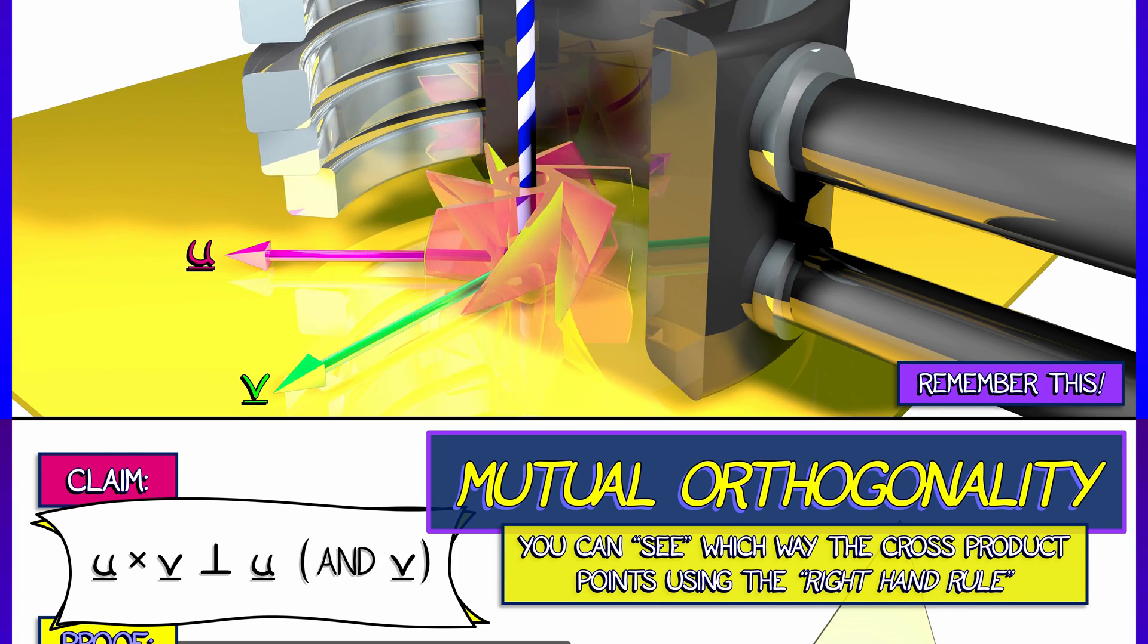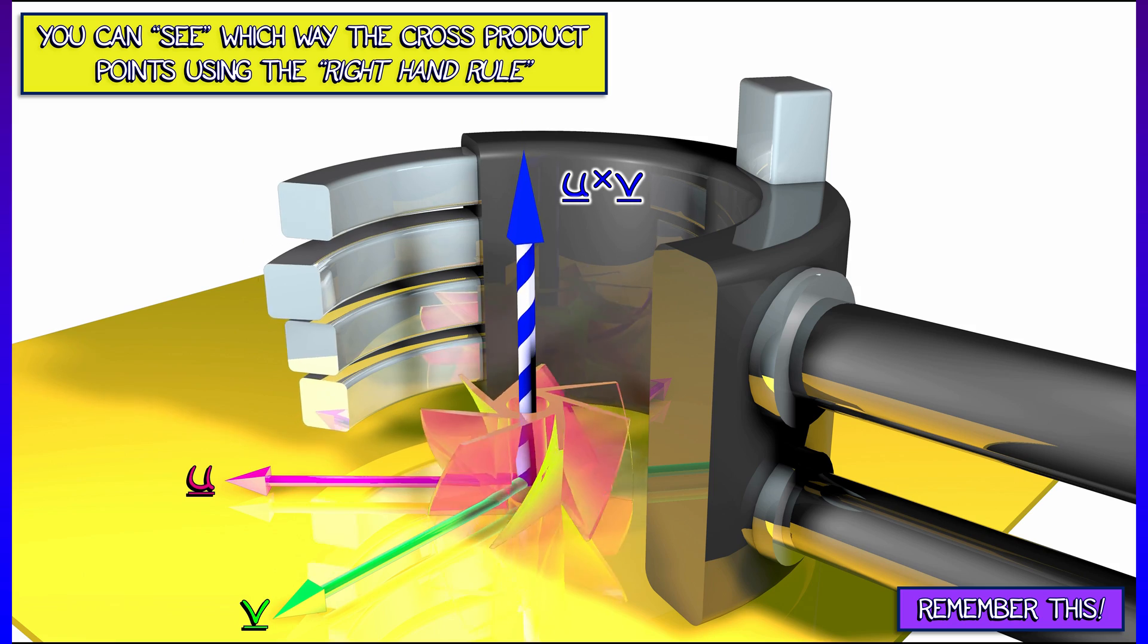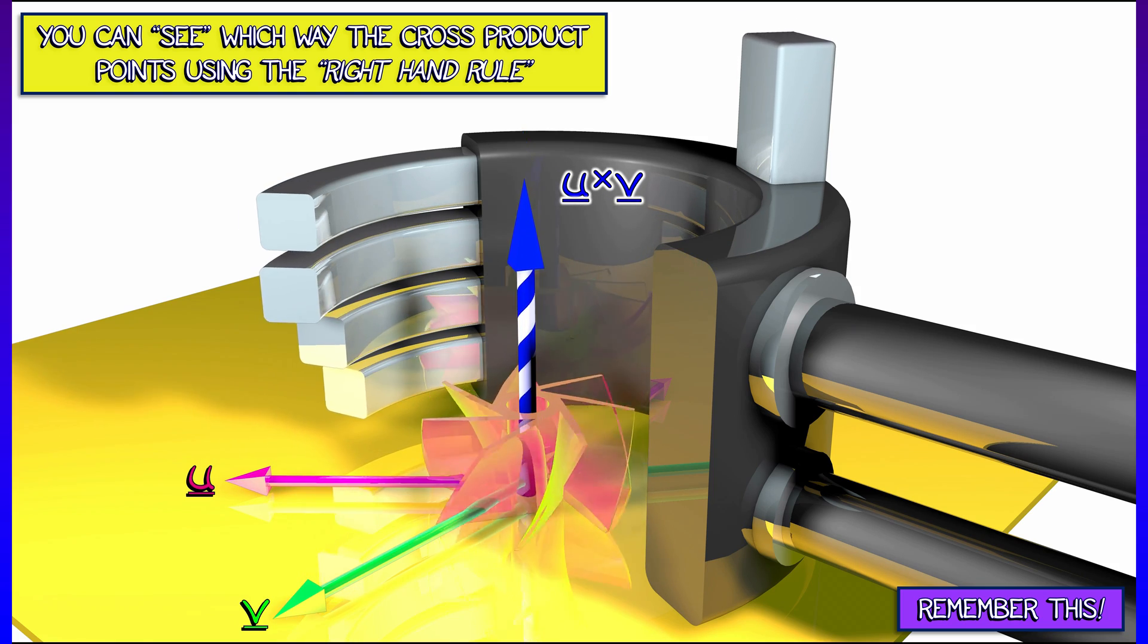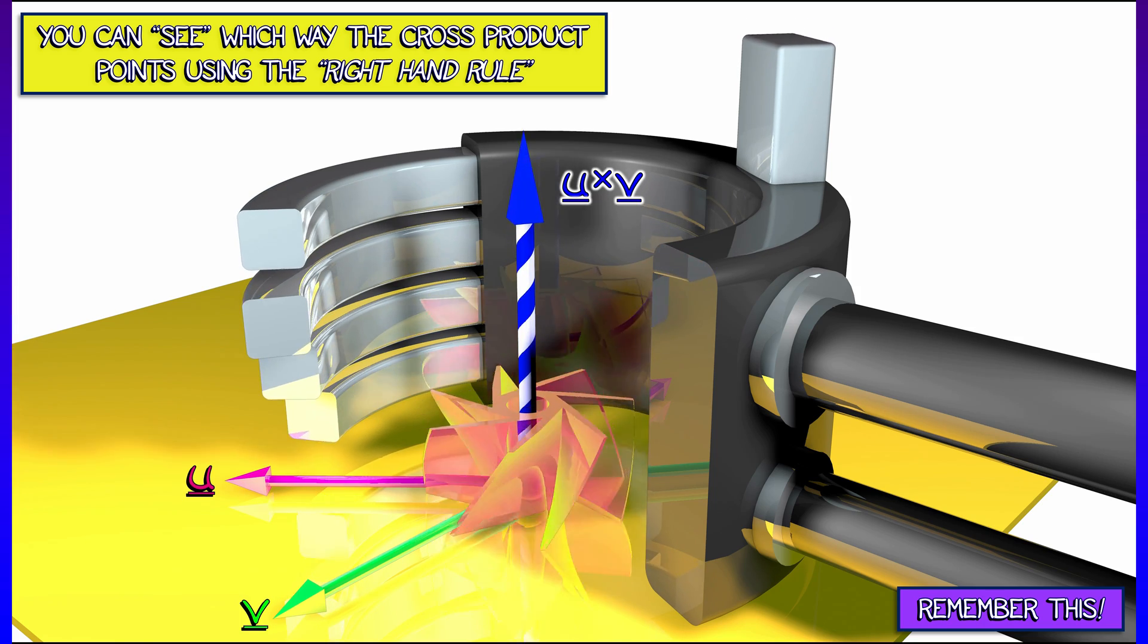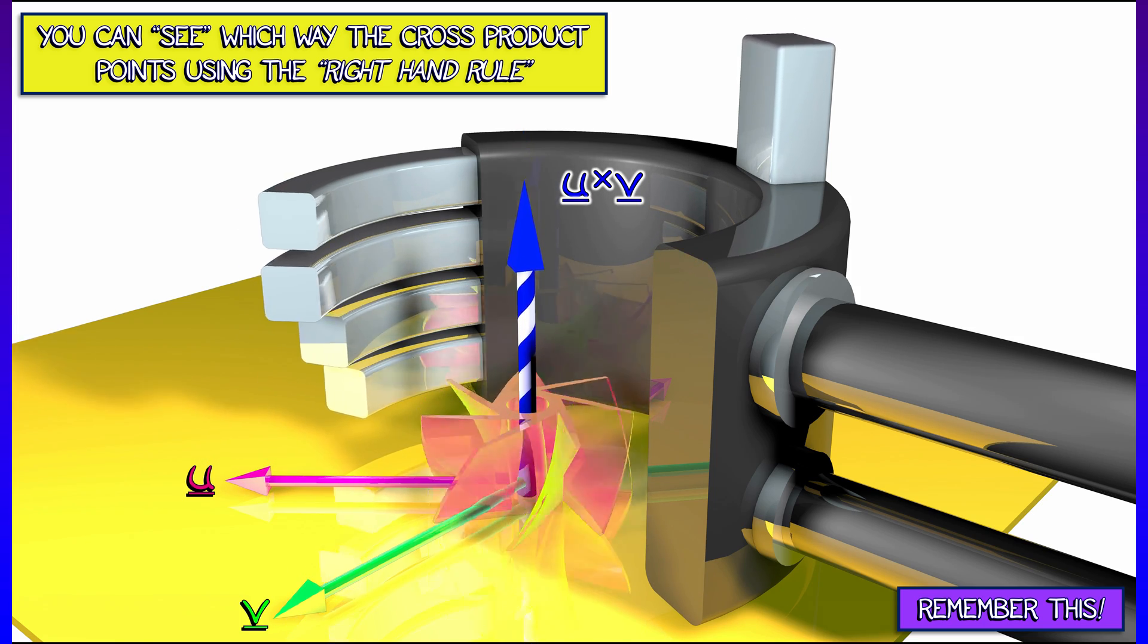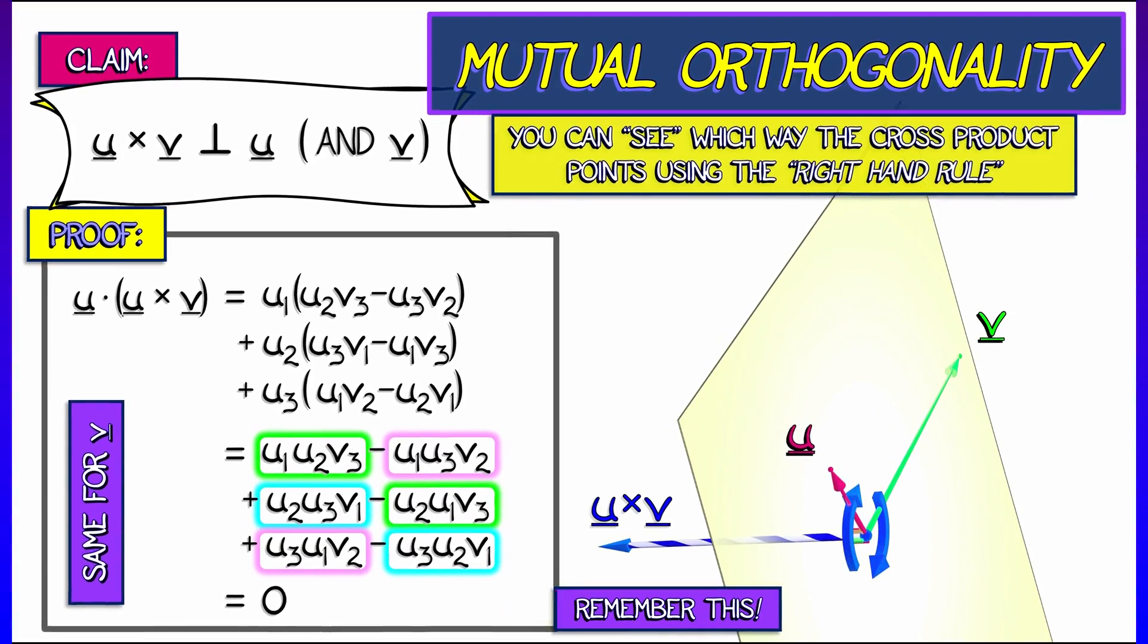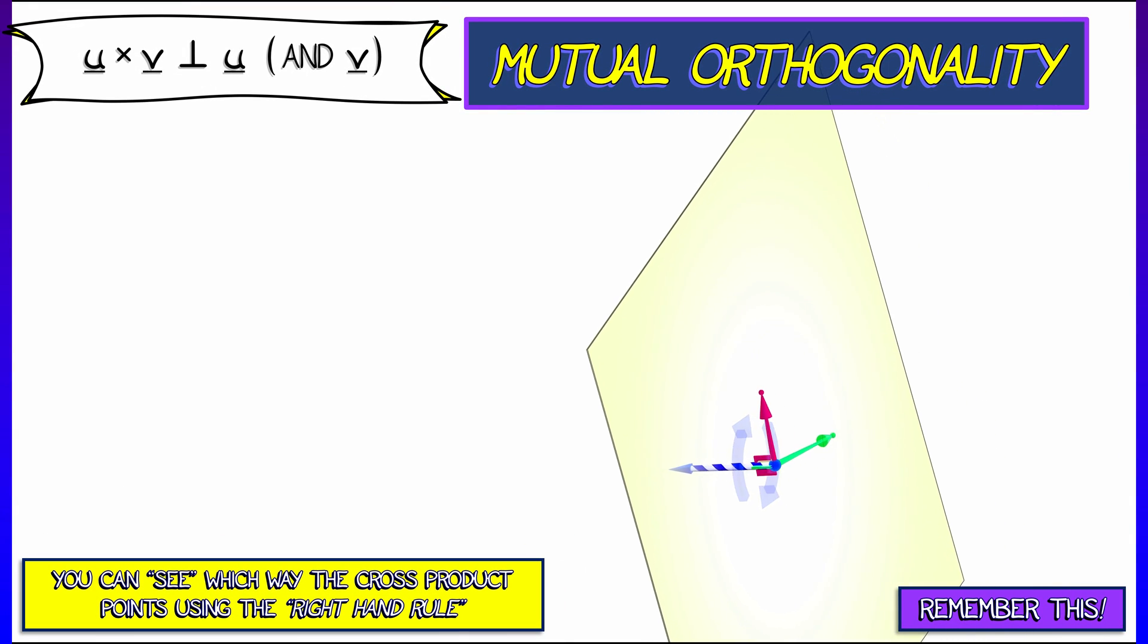The idea behind the right-hand rule is within that plane spanned by u and v, you take your right hand, right hand, not left, and you curl your fingers within that plane in the direction going from u to v. And then your thumb points up in the direction along which the cross-product, u cross v, sits.